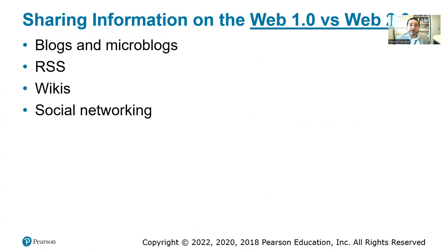We have Web 1.0 versus Web 2.0. Web 1.0 means the internet and websites were very static — they just displayed information and as an end user, you couldn't contribute, add content, or generate content to that website. Web 2.0 means you as a user are able to generate content — websites are more interactive. Examples include social media, where you can post, create your own content, like, dislike, and do many things.